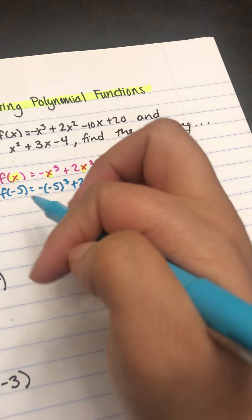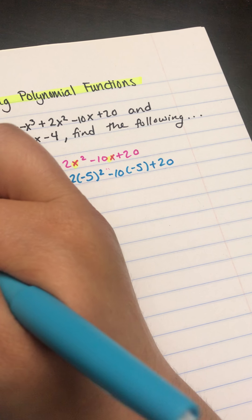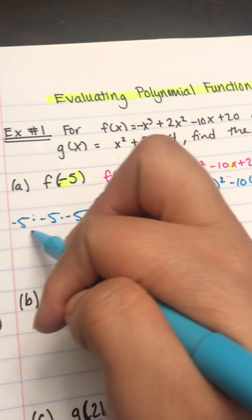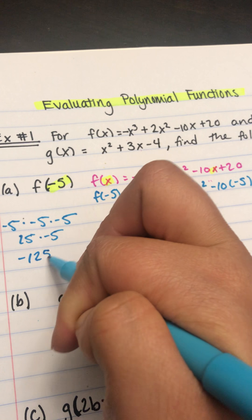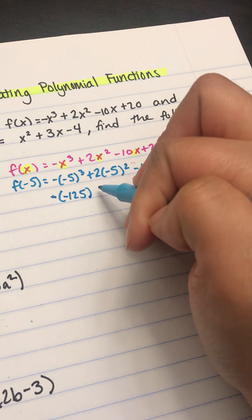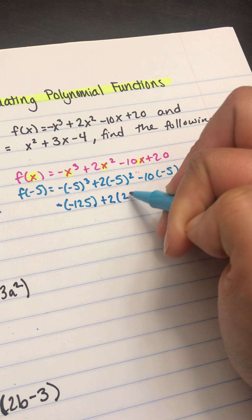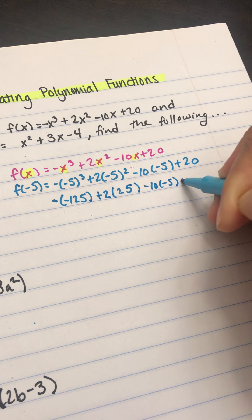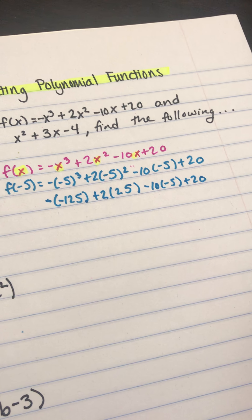So now we're just going to simplify here. This negative stays separate. Negative 5 to the third power is negative 5 times negative 5 times negative 5, which becomes 25 times negative 5 or negative 125. Plus 2 times negative 5 squared, which is negative 5 times negative 5 equals positive 25. So right now I just simplified all those exponents using PEMDAS.